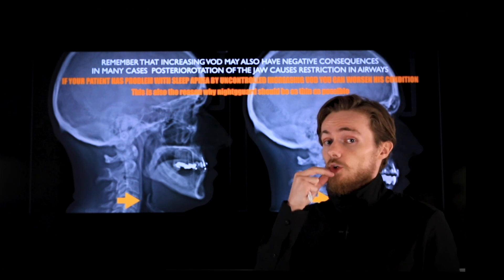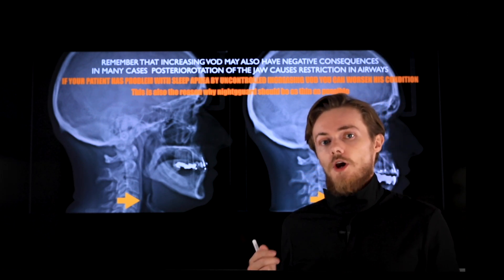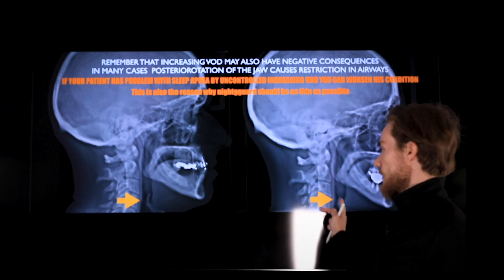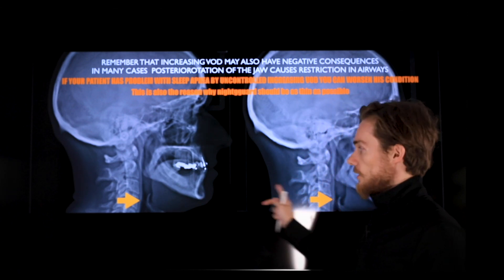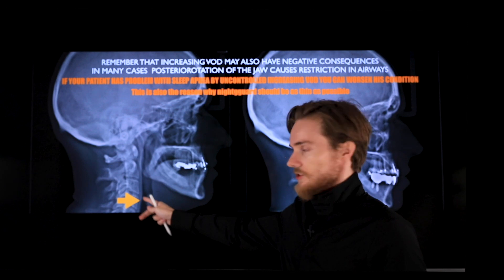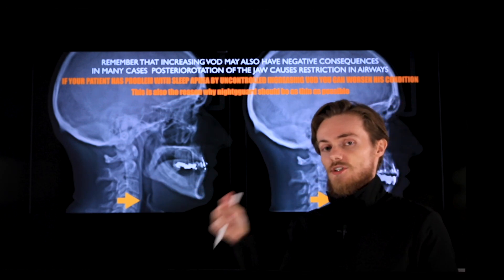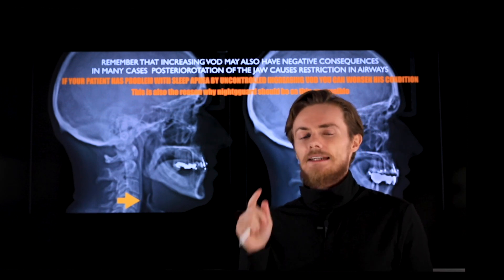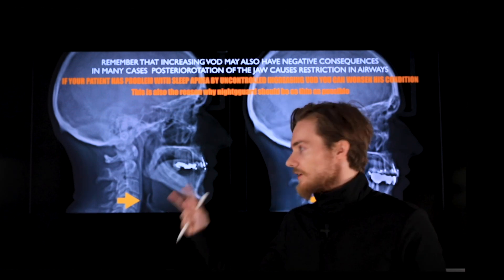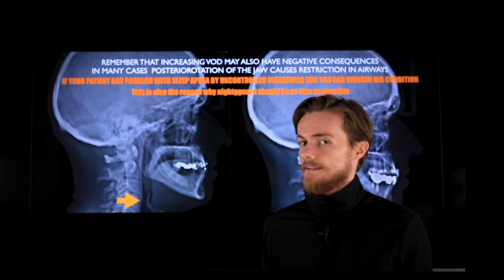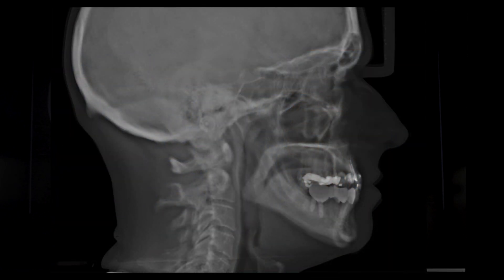This is one, and this is the second one: when you increase vertical occlusal dimension, you always have to keep in mind you are posterior rotating lower jaw. Once you posterior rotate lower jaw, you are restricting the airways. In here you see pretty wide airways. In here you see that they are restricted. So if you have a sleep apnea patient with restricted airways and now you increase the VOD significantly, you restrict it even more.